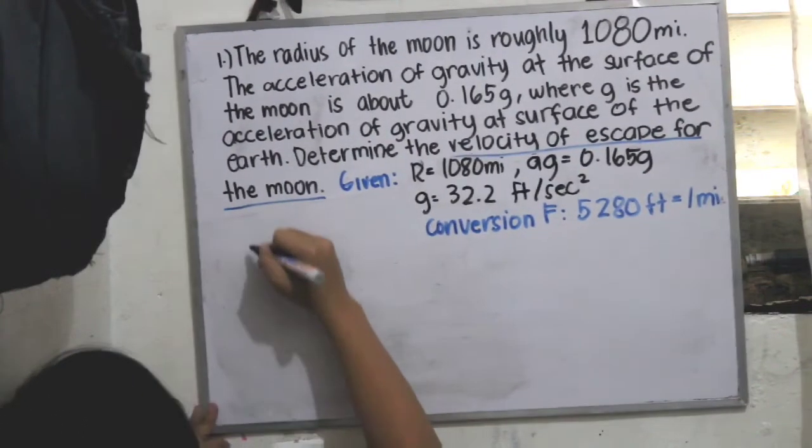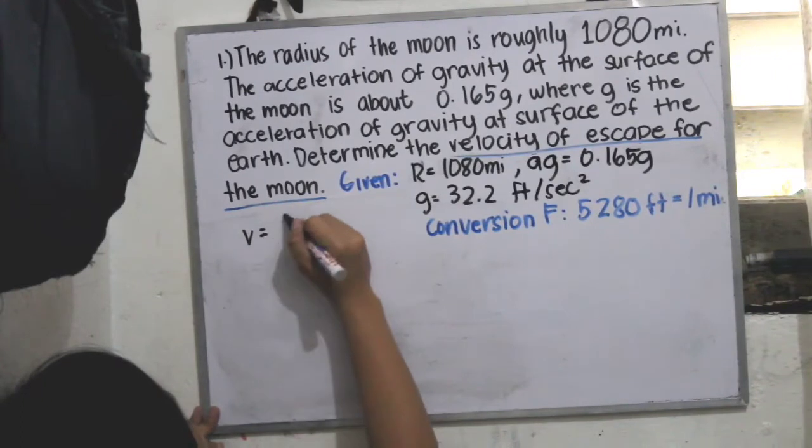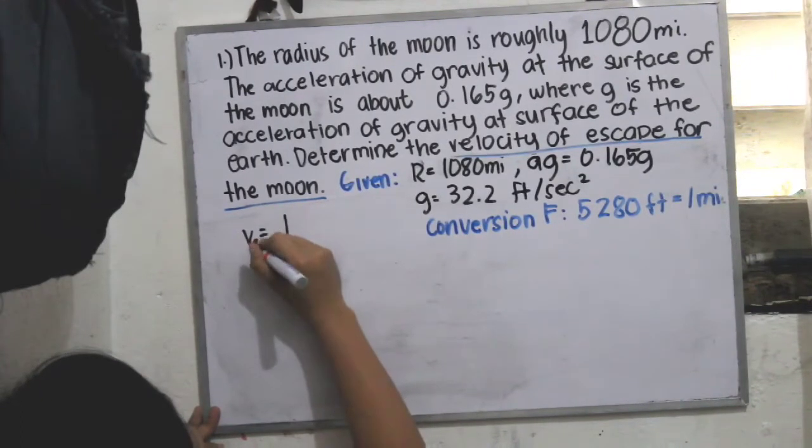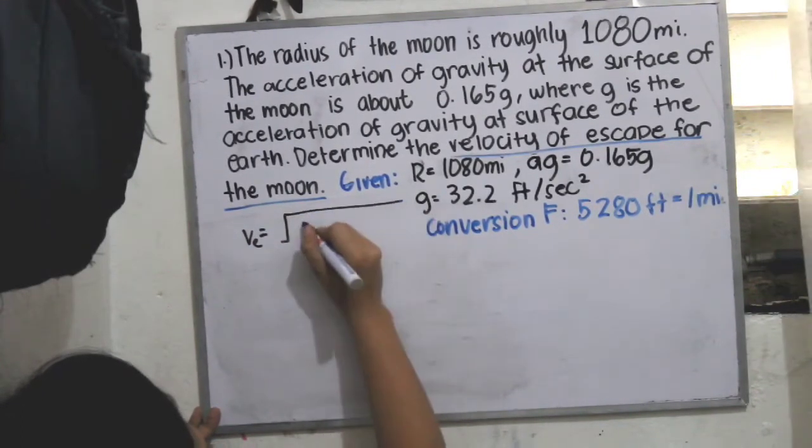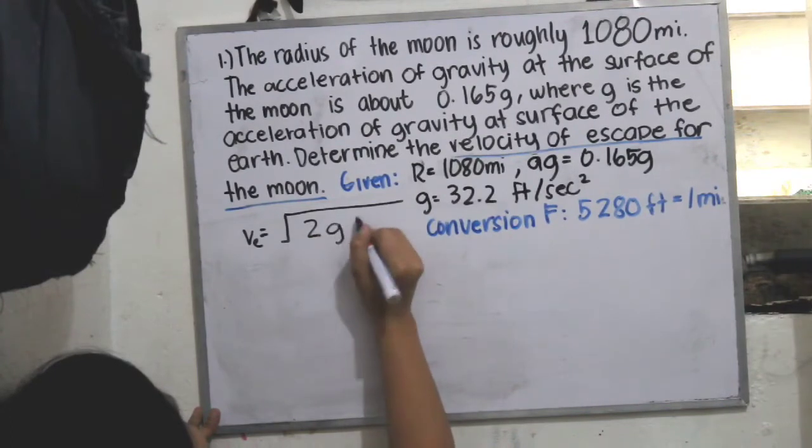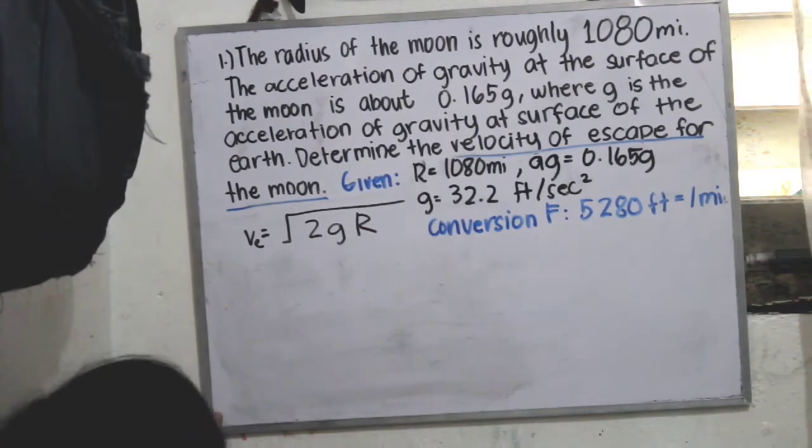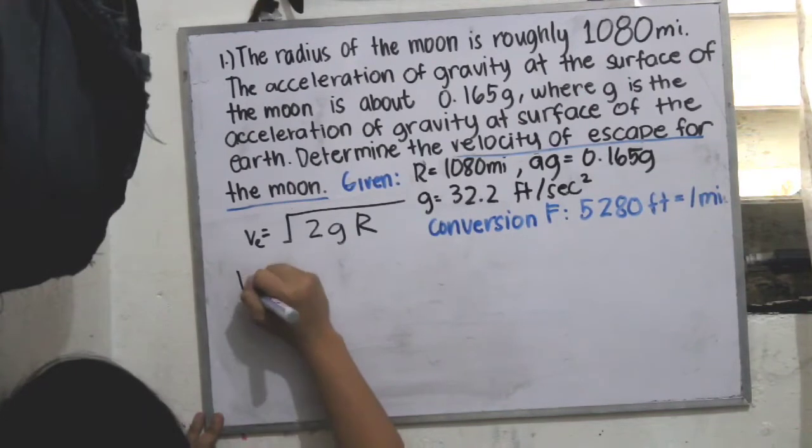So we are about to put our formula, which is Ve is equal to the square root of 2g multiplied by R. So we are now about to plug in our values.